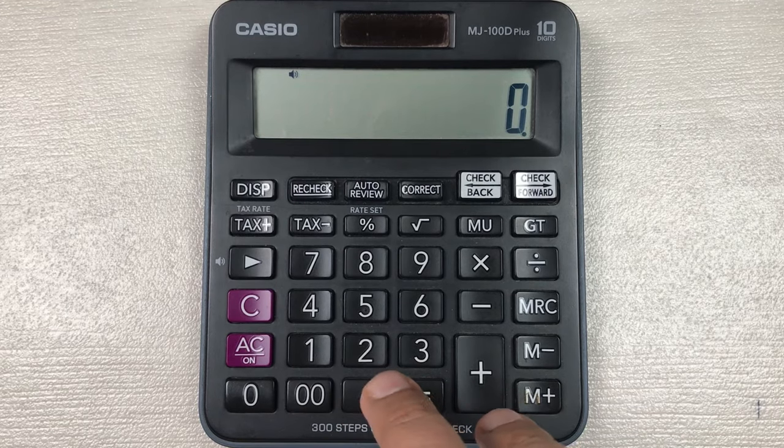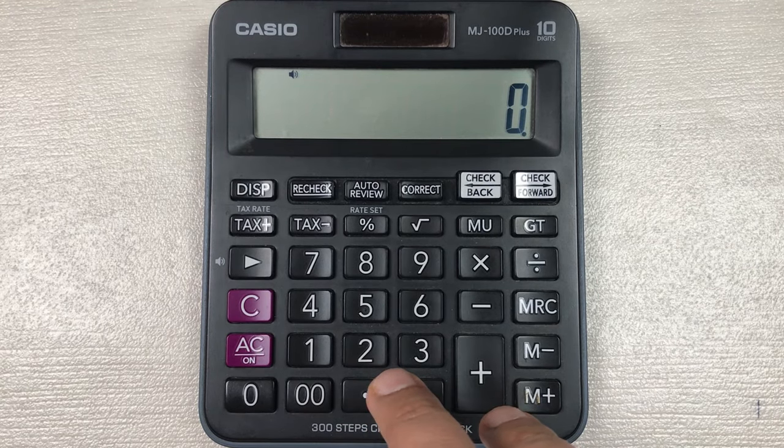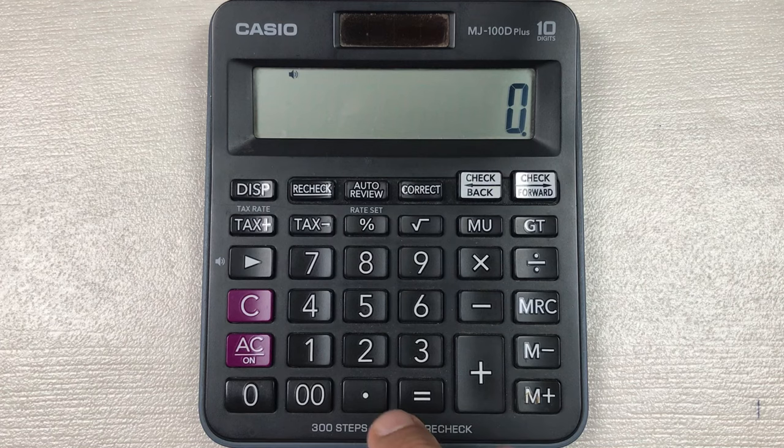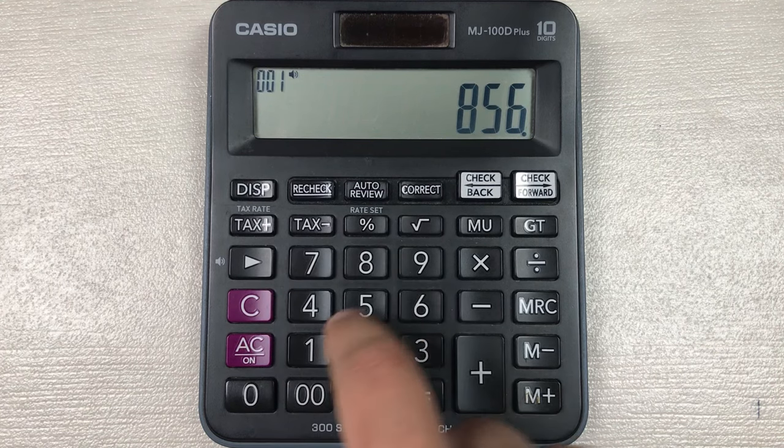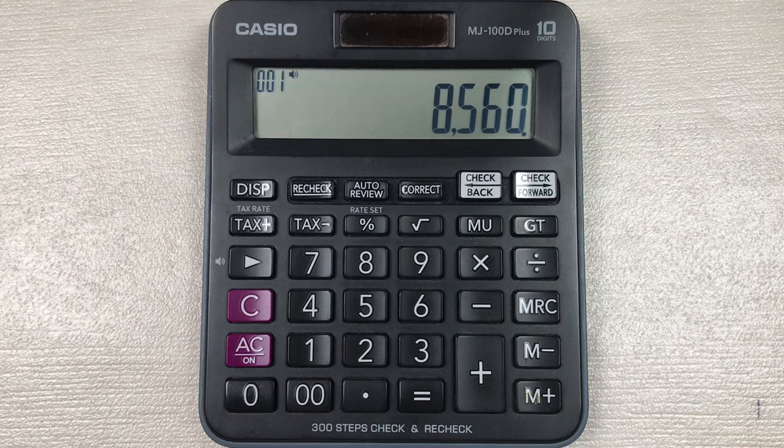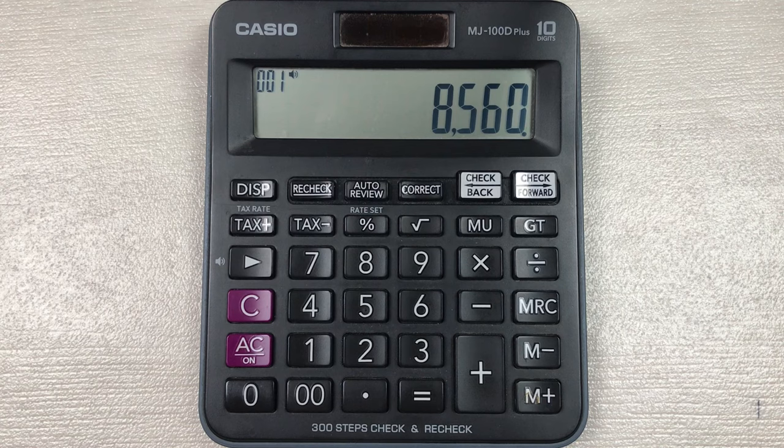Hello guys, I hope you are doing really well. In today's video, I am going to show you how to calculate 70 percent of a price on calculator. For example, you have an item and the price of that item is 8560, and you want to find out what will be the final price after 70 percent off.